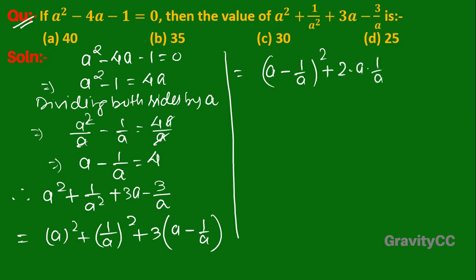Substituting the value a - 1/a = 4, we get 4² + 2 + 3×4, which equals 16 + 2 + 12.